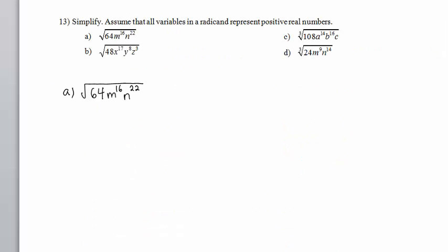In Part A, we have the square root of 64 times m to the 16th times n to the 22nd. Note that the implied root number is 2. We will need this fact.